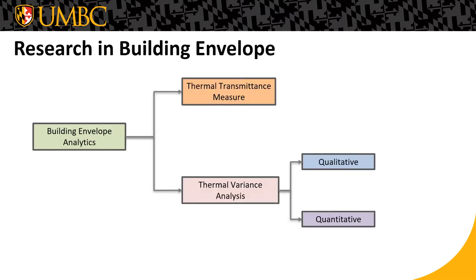Previous research in building envelope can be divided into two main tracks. One measures the thermal transmittance, which is the rate of heat transfer through building materials. Another track performs qualitative and quantitative thermal variance analysis. Qualitative analysis involves temperature difference analysis through visual inspection of thermal images and different thermal sensors, while quantitative analysis includes statistical methodologies for thermal variation detection.